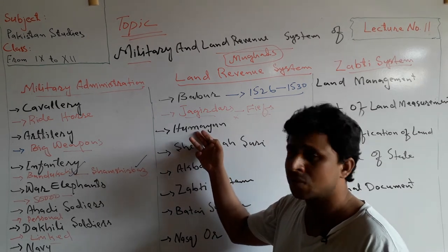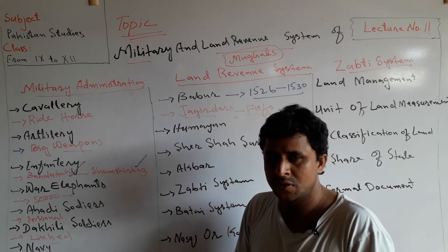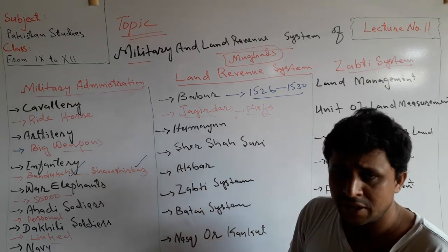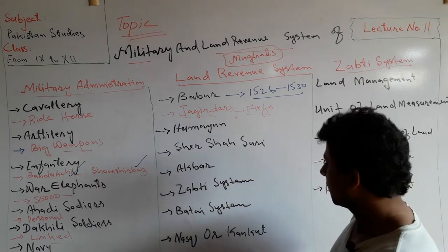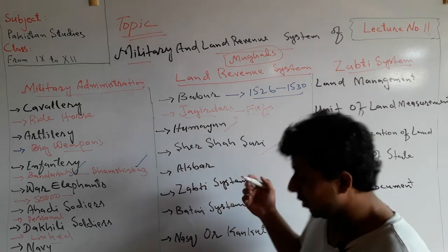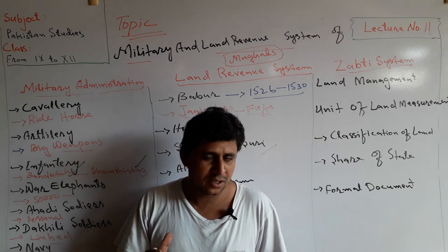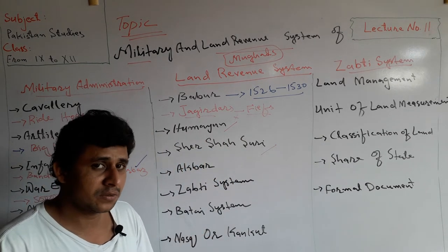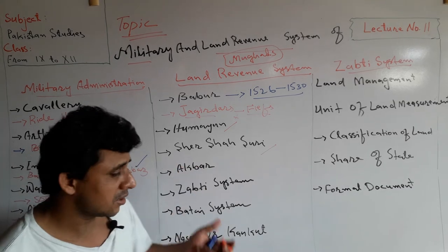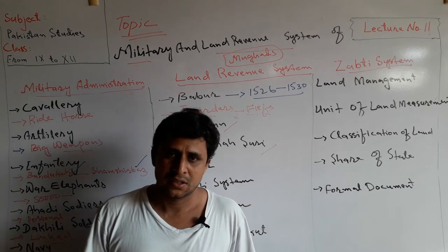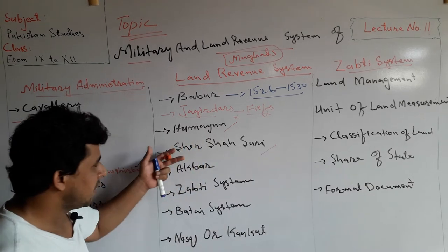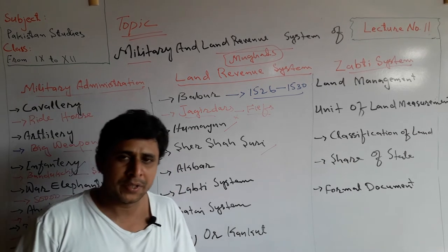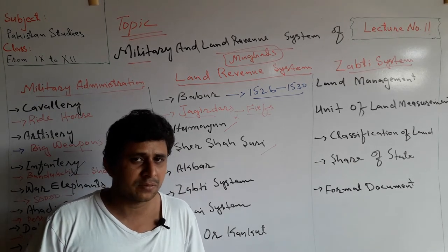Humayun had little time to introduce a land revenue system or major policies. When the Suri dynasty began, a sound land revenue system was introduced by Shershah Suri, who was very interested in administration. That is why Shershah Suri is called the forerunner of Akbar, because Akbar copied his land revenue system.